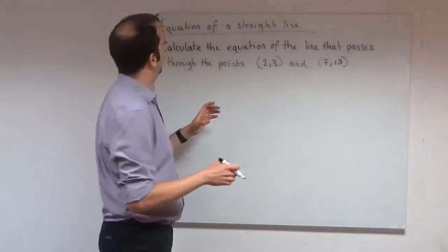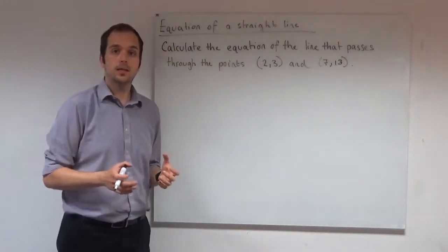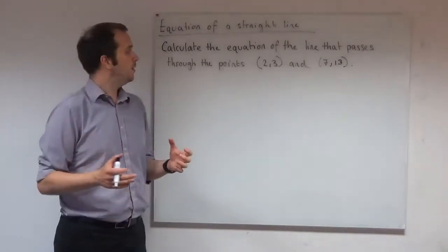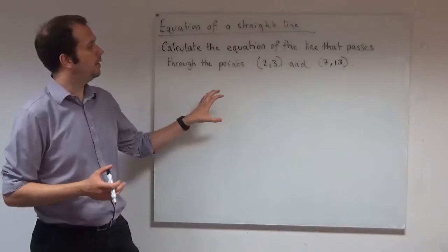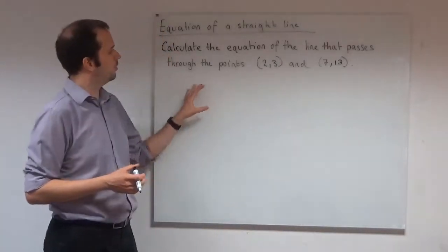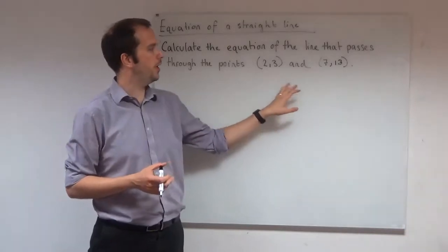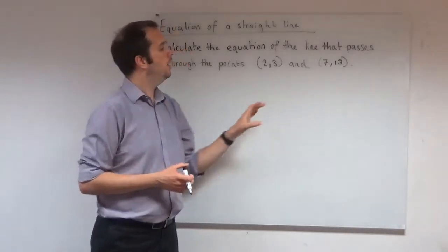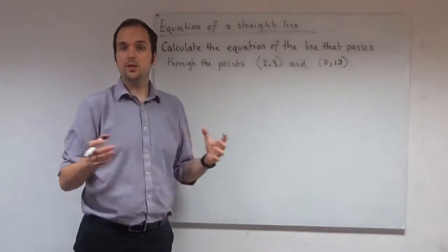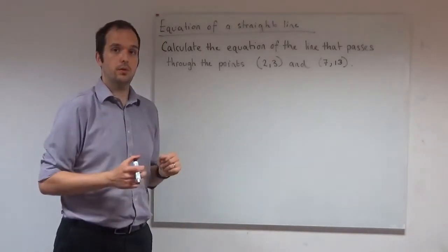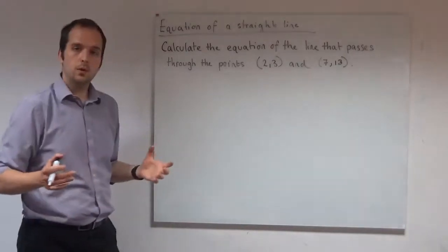Right, in this video we are investigating the equation of a straight line. What we're going to do is calculate the equation of the line that passes through these two points given here. So we've got the point (2,3) and the point (7,13). And what we need to do is just find the equation of the straight line that passes through those two points.